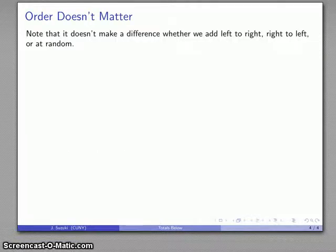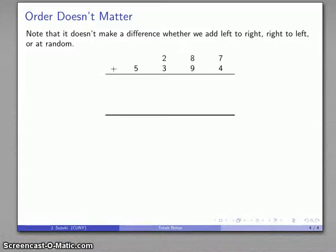Now, the important thing to notice here is it doesn't make a difference whether we add left to right, right to left, or completely at random, as long as we add everything. So again, here's my addition 287 plus 5,394. And this time, for variety's sake, let's go ahead and add from right to left.